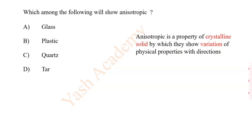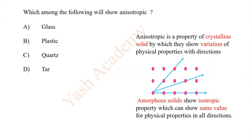Which among the following will show an isotropic? Options: A glass, B plastic, C quartz, D tar. Correct answer is D quartz.